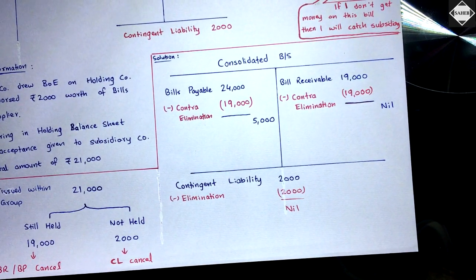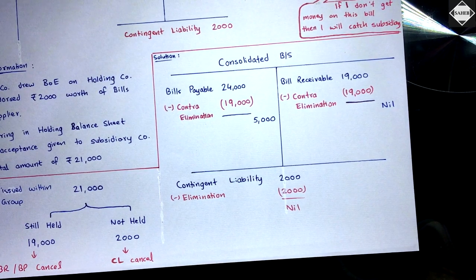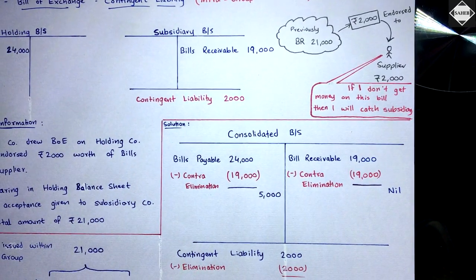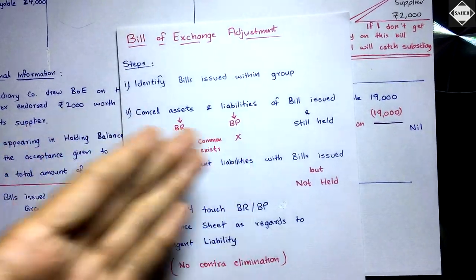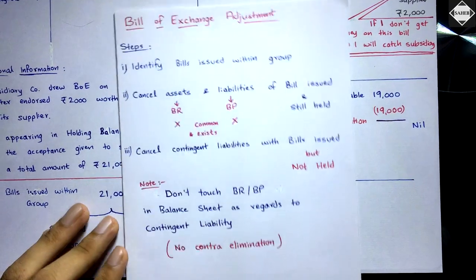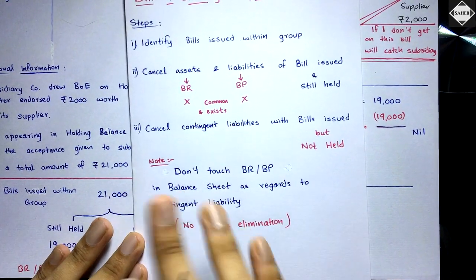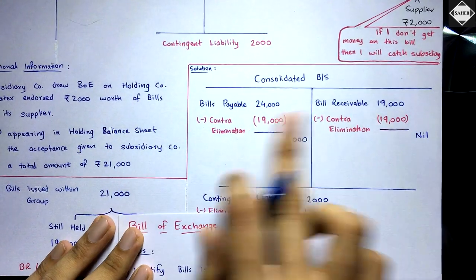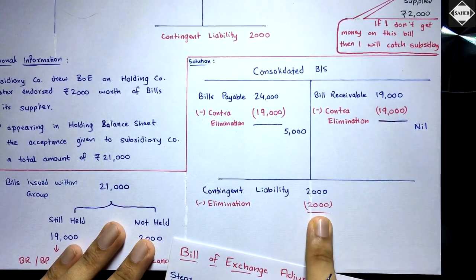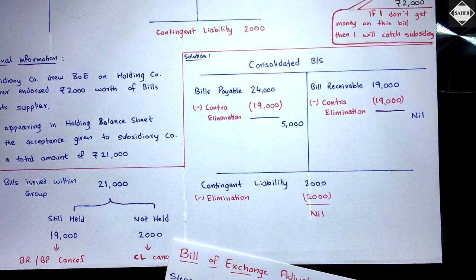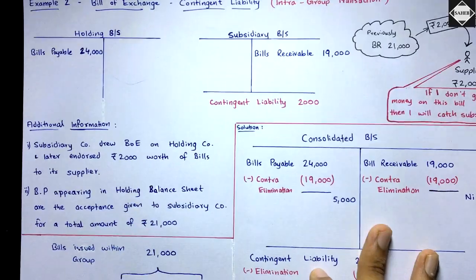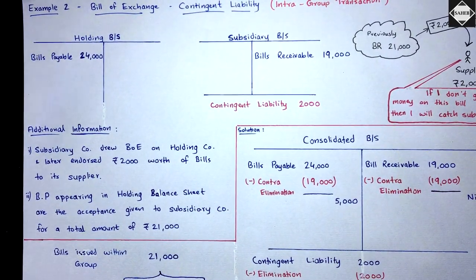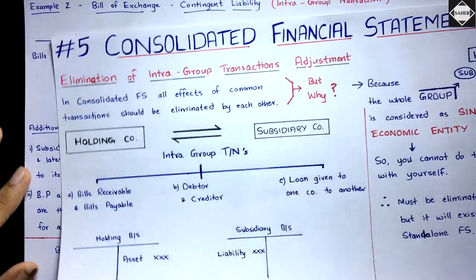The basic rule is: whatever is common, eliminate the contingent liability — that's all. If you want to be mechanical about it: whatever is common, delete it from contingent liability and reduce it. Don't touch bills receivable and bills payable as regards to that contingent liability — just reduce the contingent liability below the balance sheet. That is the whole concept of contingent liability and bills of exchange in intra-group transactions.